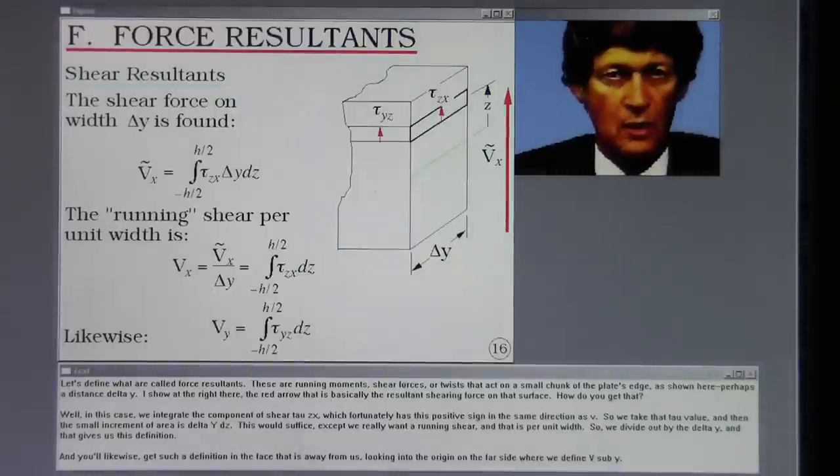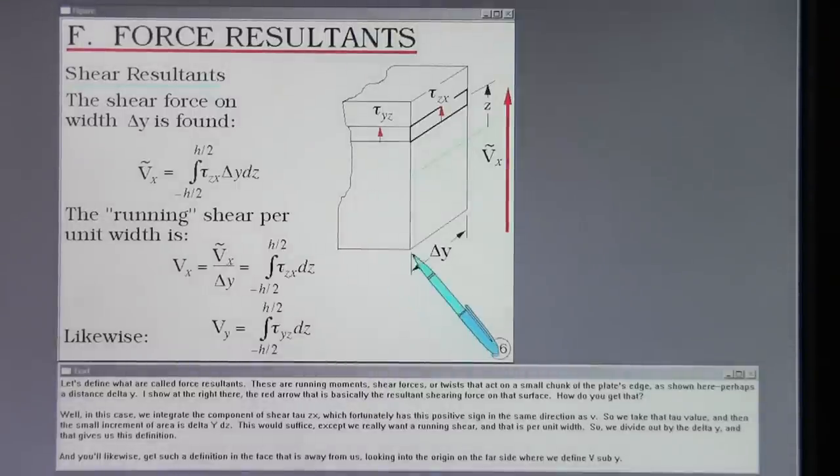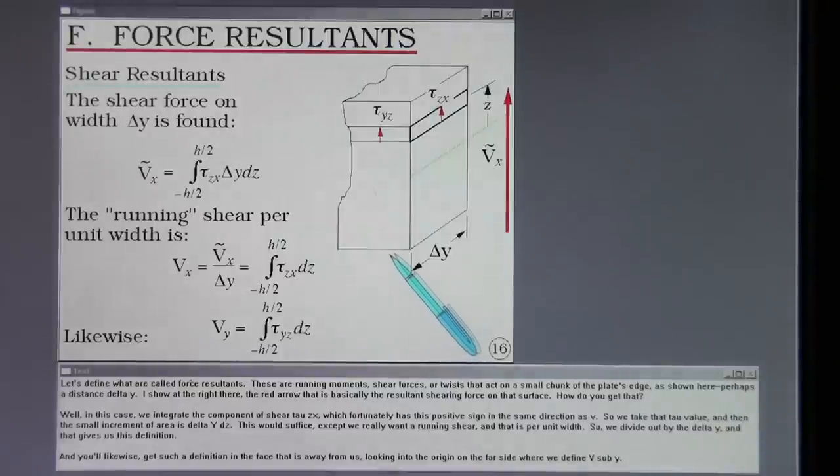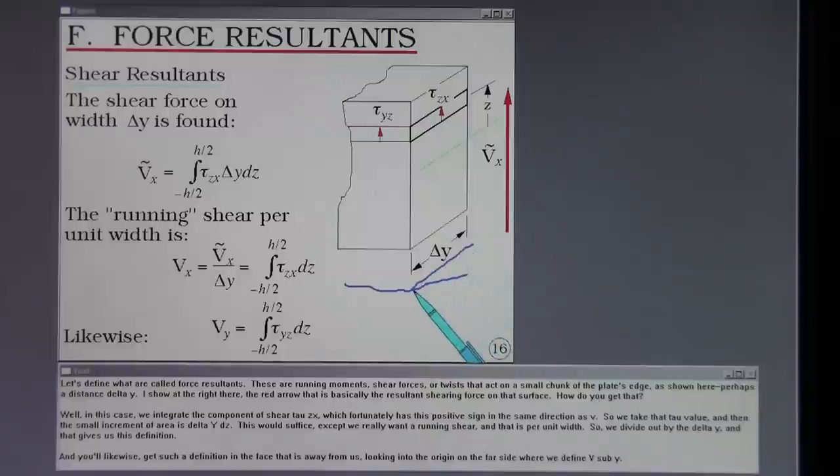Let's define what are called force resultants. These are running moments, shear forces, or twists, that act on a small chunk of the plate's edge as shown here, perhaps a distance delta Y. I show at the right there the red arrow that is basically the resultant shearing force on that surface.